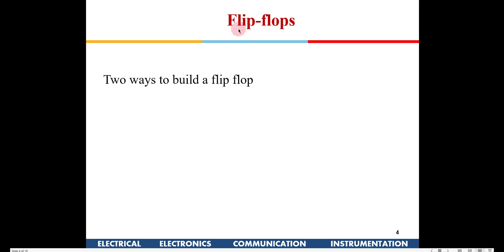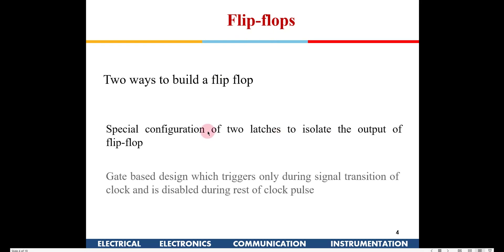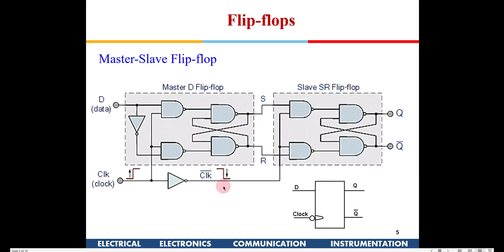To eliminate the race-around problem, we use flip-flops. A flip-flop can be made in two ways: by configuring two latches, or by using gates. The first technique uses two latches — a master latch and a slave latch — specifically a D master latch and a D slave latch.